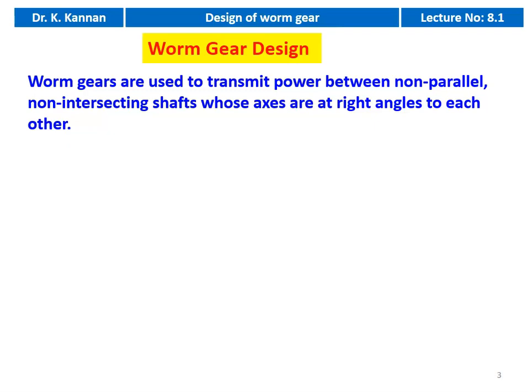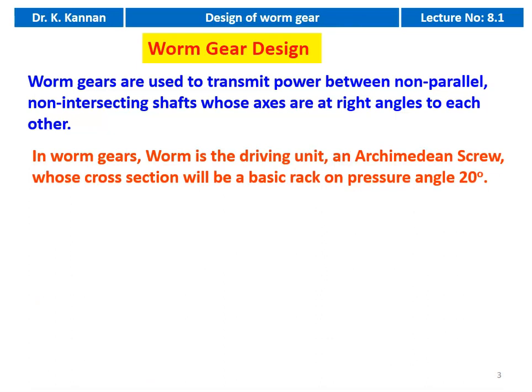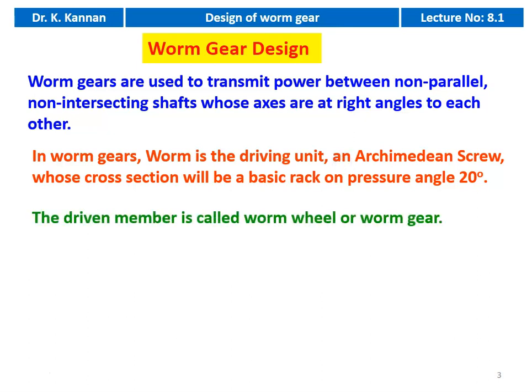But here, in the worm gear design, the two shafts — the shaft of the worm and the shaft of the gear — are non-parallel and non-intersecting. In worm gear, the worm is always the driving unit and it is an Archimedean screw whose cross section will be a basic rack at a pressure angle of 20 degrees. The driven member is called the worm wheel or the worm gear.